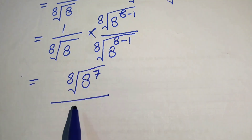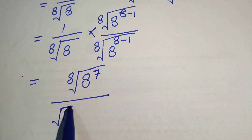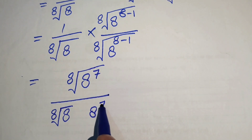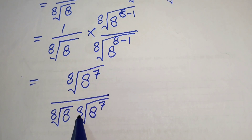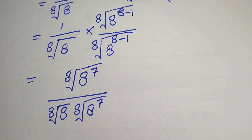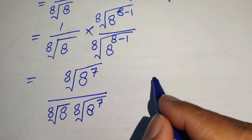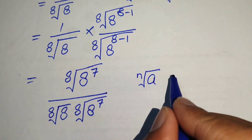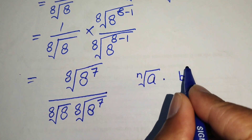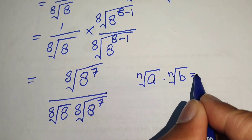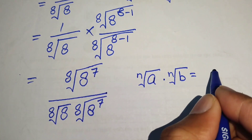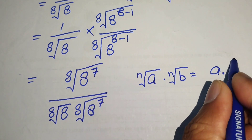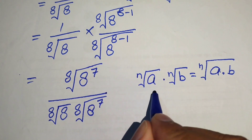In the denominator we have the 8th root of 8 times the 8th root of 8 to the power of 7. We apply the radical product rule: if we have the nth root of a times the nth root of b, we combine these two roots and write it as the nth root of a multiplied by b.